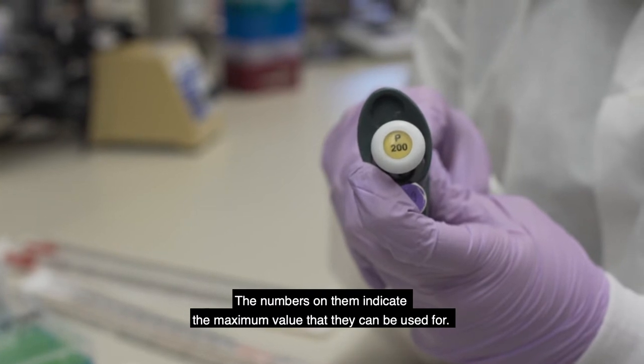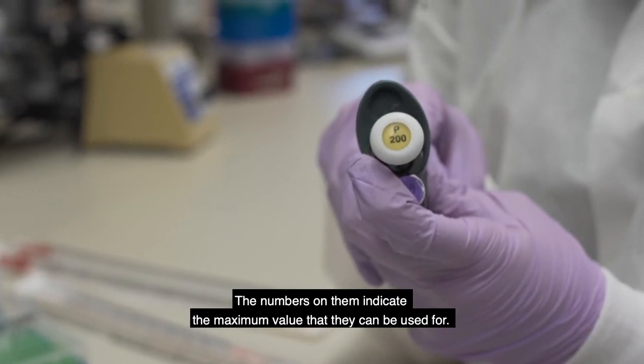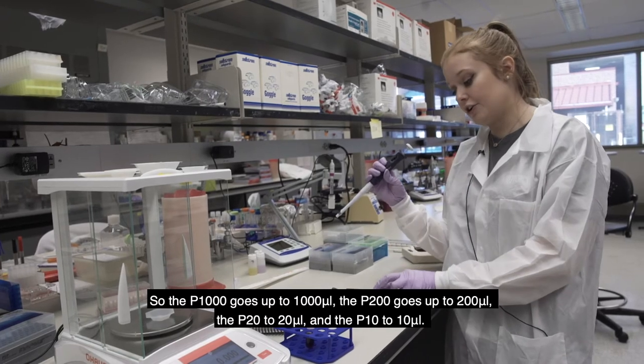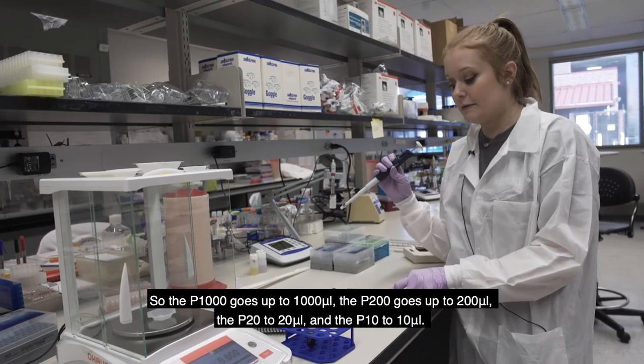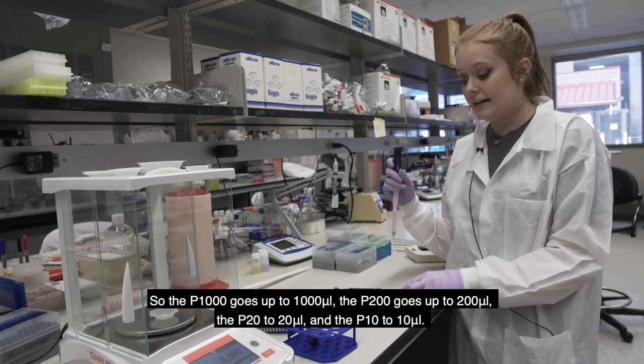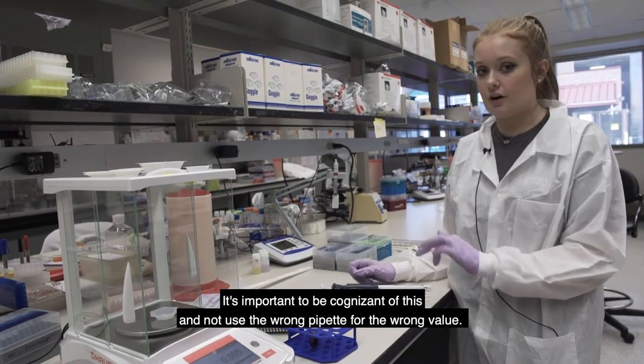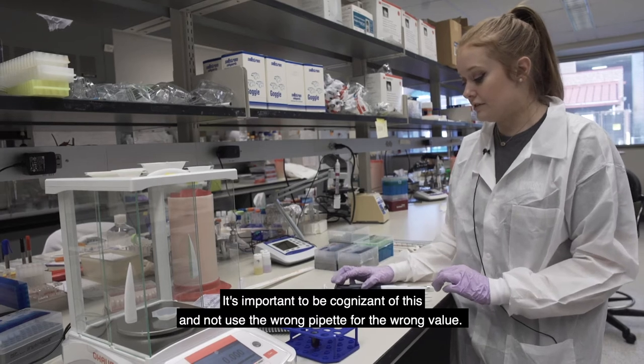And the numbers on them indicate the maximum value that they can be used for. So the P1000 goes up to 1000 microliters, the P200 goes up to 200 microliters, the P20 to 20, and then the P10 to 10. So it's important to be cognizant of this and not use the wrong pipette for the wrong value.